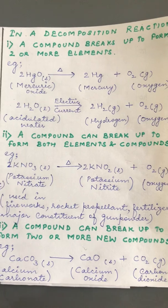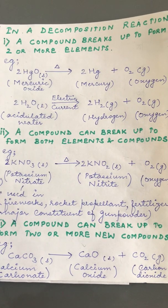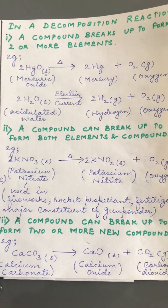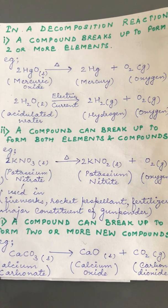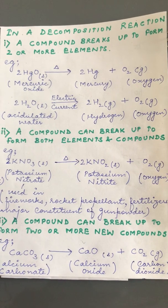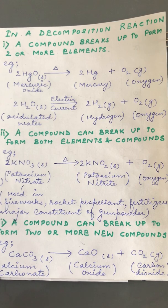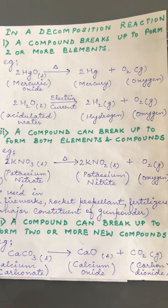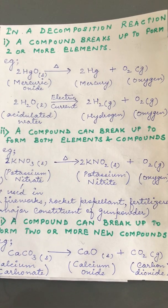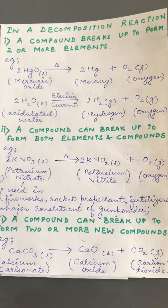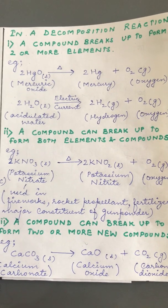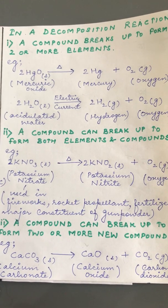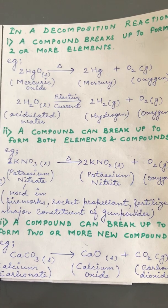A compound can also break up to form both elements and compounds. Potassium nitrate KNO3 — a very important salt used in fireworks, rocket propellants, fertilizers, and as a major constituent of gunpowder — on being heated forms potassium nitrite KNO2 plus oxygen O2. Note that NO3 and NO2 are two different radicals. A compound can also break up to form two or more new compounds. Calcium carbonate is a white colored solid found in marble and chalk.